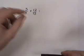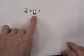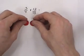To do this using counters, we first must represent the fraction 12 fifteenths. And to do that, we must determine the whole.